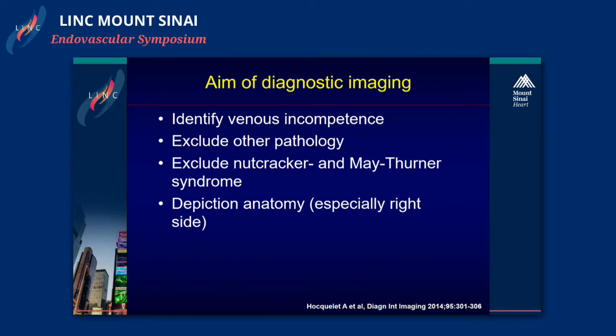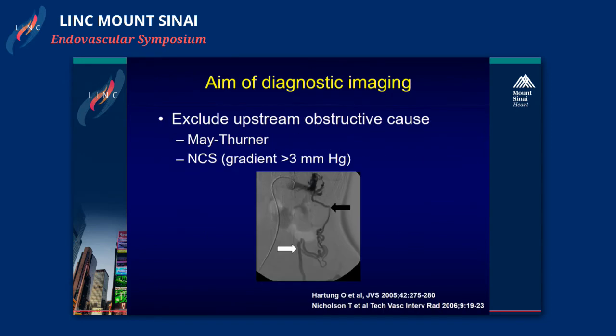The aim of diagnostic imaging is to identify venous incompetence, to exclude other pathology — mainly nutcracker and May-Therner syndrome — and also to depict the anatomy, especially on the right-hand side, because this will save you a lot of time in looking for the origin of the right ovarian vein. You should exclude upstream obstructive disease, May-Therner, but specifically nutcracker syndrome, and measure a pressure gradient. If the gradient is more than three millimeters of mercury, then you can consider nutcracker syndrome present.